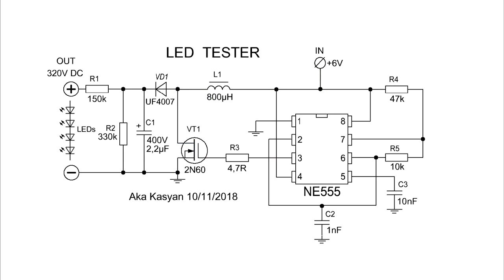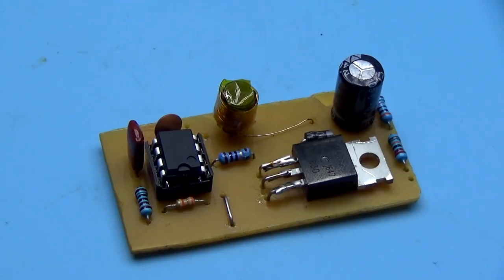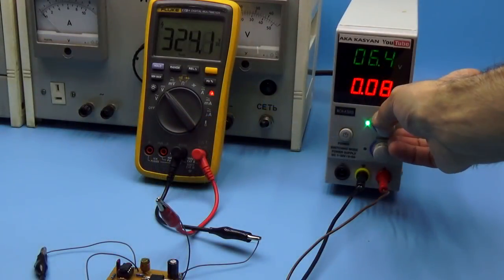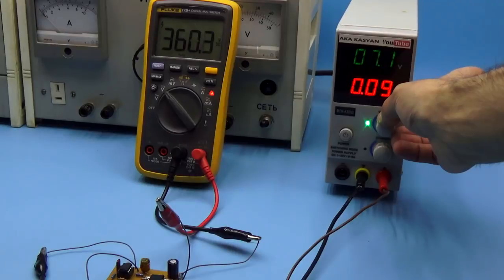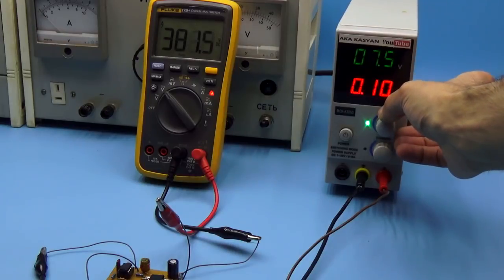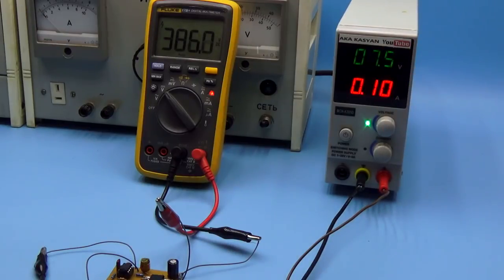Next, the transistor closes. The choke gives up the previously accumulated energy in the form of a surge voltage which is 10 times higher than the supply voltage. This voltage is rectified and accumulated in a high voltage electrolytic capacitor. The DC-DC converter is an ordinary booster without feedback, so the output voltage isn't stabilized and depends on supply voltage and load power.